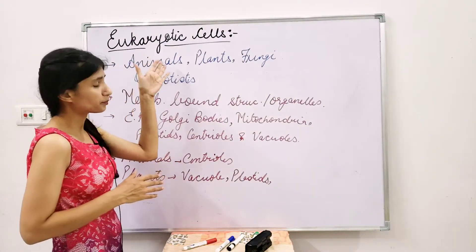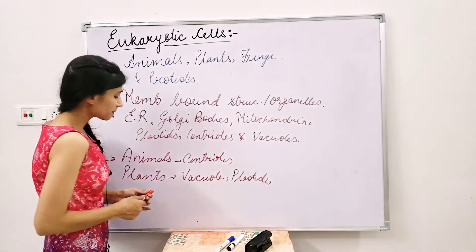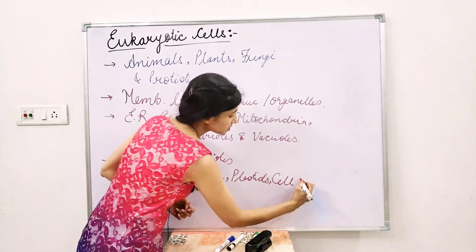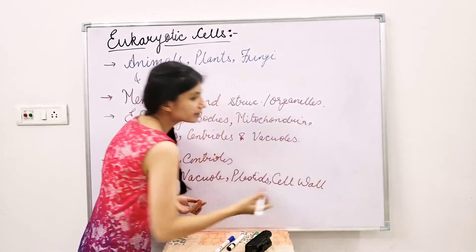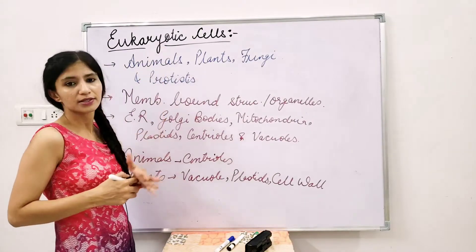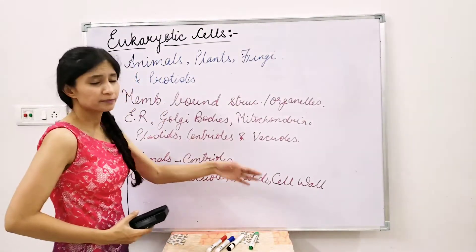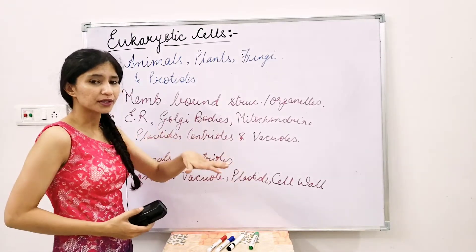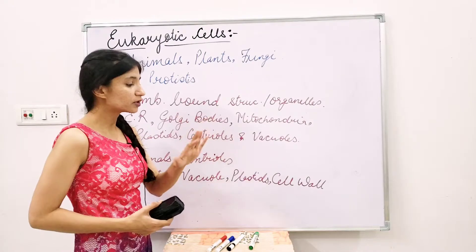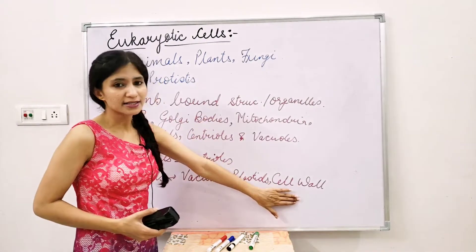Another very different characteristic that plants have is the cell wall. Animals lack a cell wall. Bacteria does have a cell wall, but bacteria is not a eukaryotic cell — it is a prokaryotic cell — so we don't count it here. Only plants have the cell wall among eukaryotes.